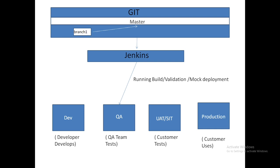You give the branch to Jenkins, and Jenkins runs the validation — the mock deployment, or build run. It's a test deployment to check whether the actual deployment will work fine or not. Once the build passes, that branch gets a green checkbox indicating the validation has passed. After that, Jenkins automatically pulls the validation-passed branch from Git and deploys it to QA — no human intervention needed. Your code is automatically moved to QA in a proper, controlled manner.